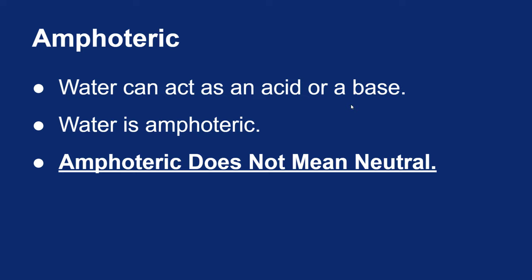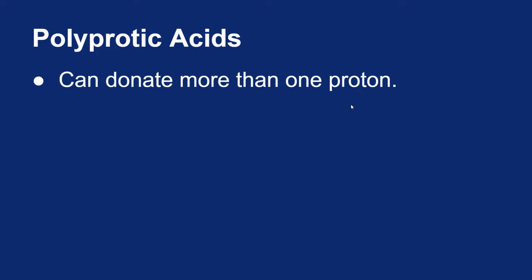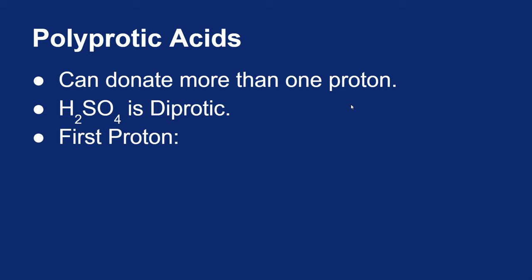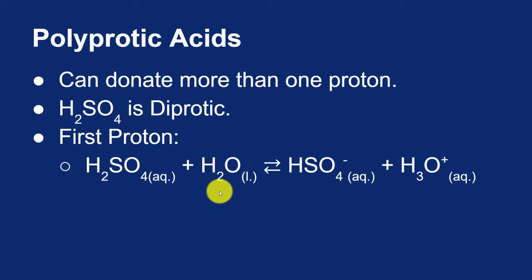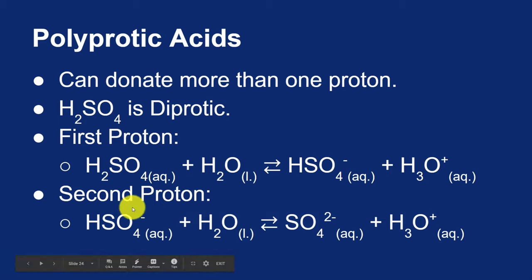Some acids we encounter are polyprotic acids — poly meaning many, protic referring to protons — so these are acids that contain more than one proton. H2SO4, sulfuric acid, is a polyprotic acid; specifically, it is a diprotic acid with two protons. If you mix H2SO4 with water, the first proton can leave the H2SO4 and attach to water, leaving the hydrogen sulfate or bisulfate ion, while water accepts the proton and turns into the hydronium ion. That bisulfate ion has another proton to give, so mixing it with more water, the hydrogen leaves the bisulfate ion and attaches to water, leaving sulfate and the hydronium ion.